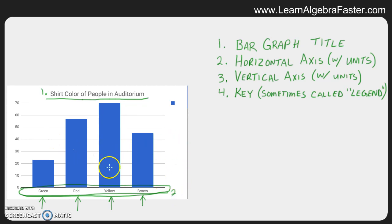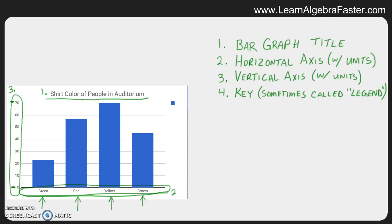The third thing to look for on a bar graph is the vertical axis, which is what is measured going up and down. Units are important on every graph — not only because you'd lose points on an exam or homework, but also because it does a good job of explaining what we're looking at. In this case we're counting shirts, and the range for this graph starts at zero and goes up to 70. If we had more people the top number would be higher; if we were counting dollars or measuring miles we would use different units.